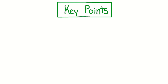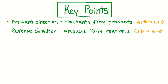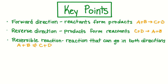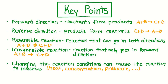Now let's sum up everything we learned with the key points for this lesson. When a reaction goes in the forward direction, the reactants form the products. And when a reaction goes in the reverse direction, the products form the reactants. If a reaction can go in both the forward and reverse direction, it's a reversible reaction, which we indicate with two single-headed arrows. But if a reaction can only go in the forward direction, it's an irreversible reaction, which we indicate in our chemical equation by using a single double-headed arrow. Changing the conditions that a reaction is occurring in can cause the reaction to reverse. Reversible reactions are always endothermic in one direction and exothermic in the other direction.